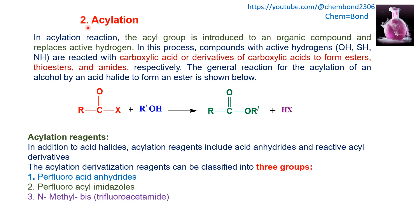The second type is acylation reaction. As the name indicates, an acyl group (RCO) is introduced in place of the active hydrogen. In this process, compounds with active hydrogen from alcohols, thiols, and amides are reacted with carboxylic acid or derivatives of carboxylic acid to form ester, thioester, and amide respectively.